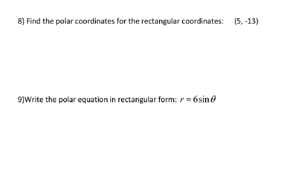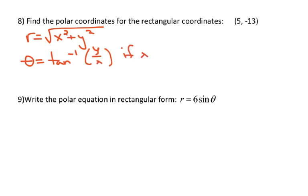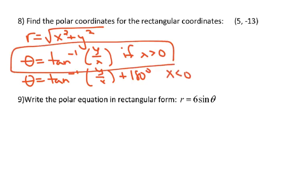Last two problems. Number 8. Find the polar coordinates for the rectangular coordinates 5, negative 13. So we found out that finding r was really just the Pythagorean theorem. But theta, you have to be careful. Theta is the inverse tangent of y over x if x is positive. But it's the inverse tangent of y over x plus pi, which is 180, if x is negative. Well, x is positive in this case, so we're going to use this one.